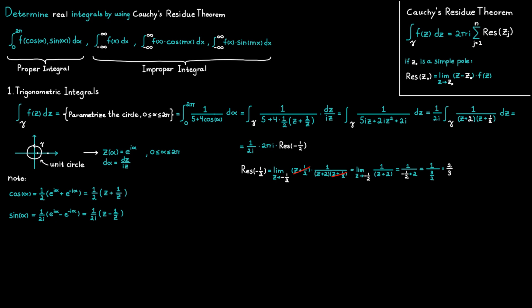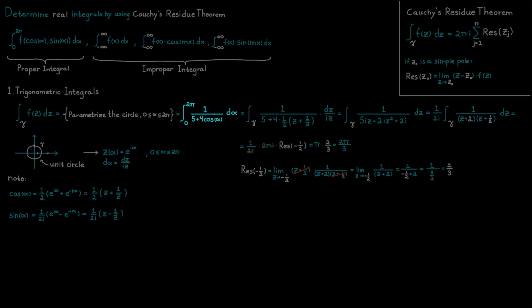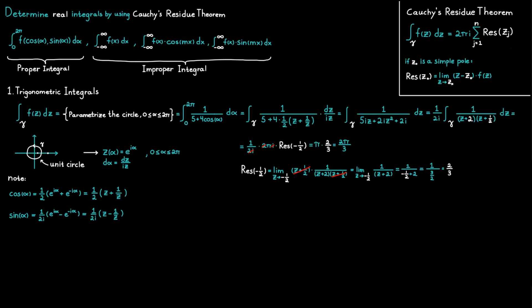We backtrack to our first expression and cancel common factors, then insert the residue value. This gives us 2 pi divided by 3. So the real integral we started with equals 2 pi divided by 3. The method we used was to step back and treat the real integral as a parameterization of a complex integral, then solve that one using Cauchy's residue theorem. Let's continue with another example.